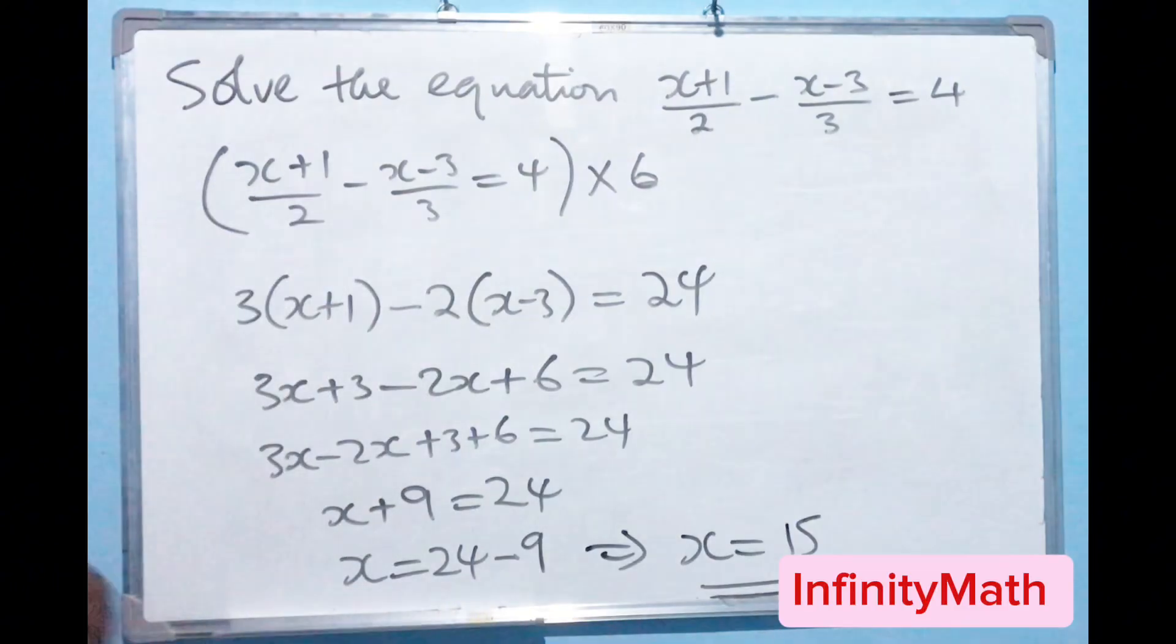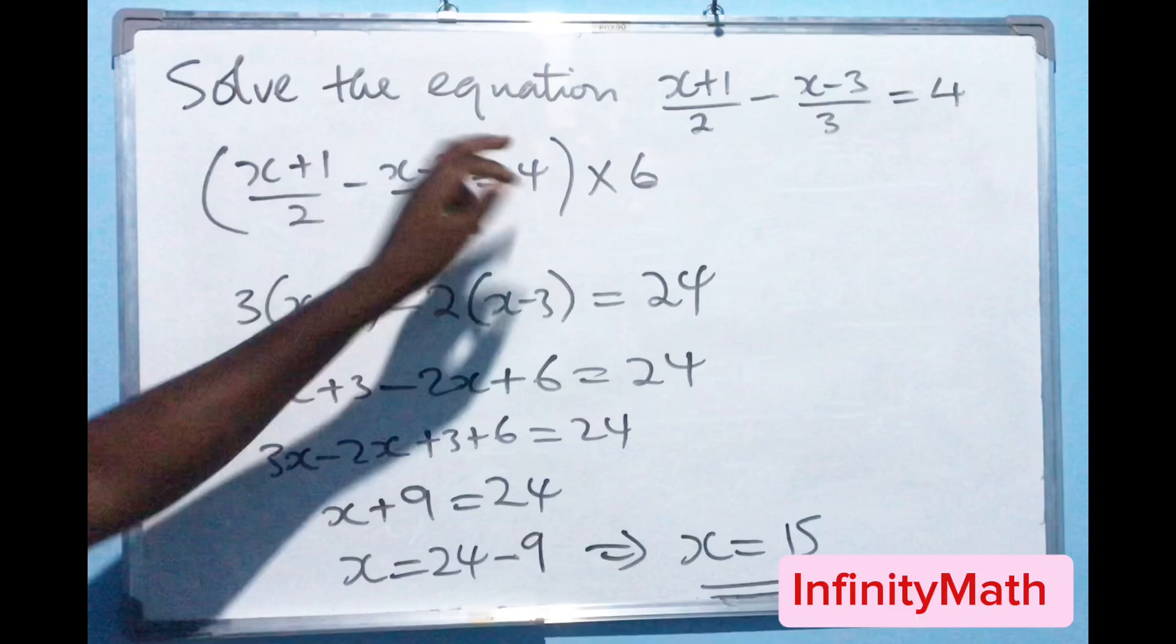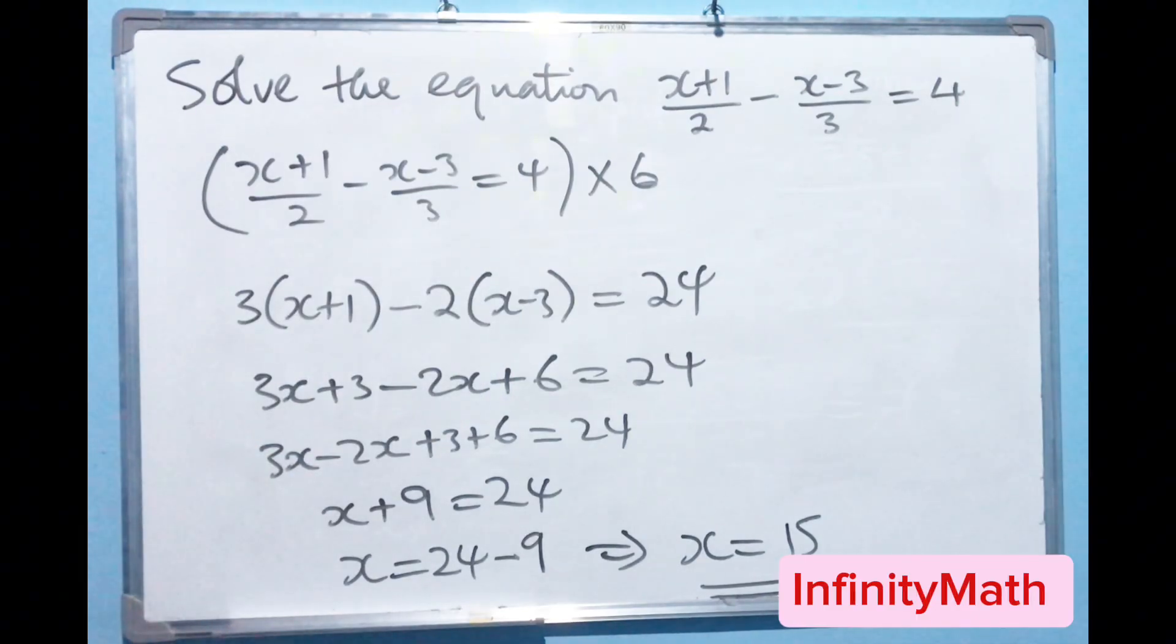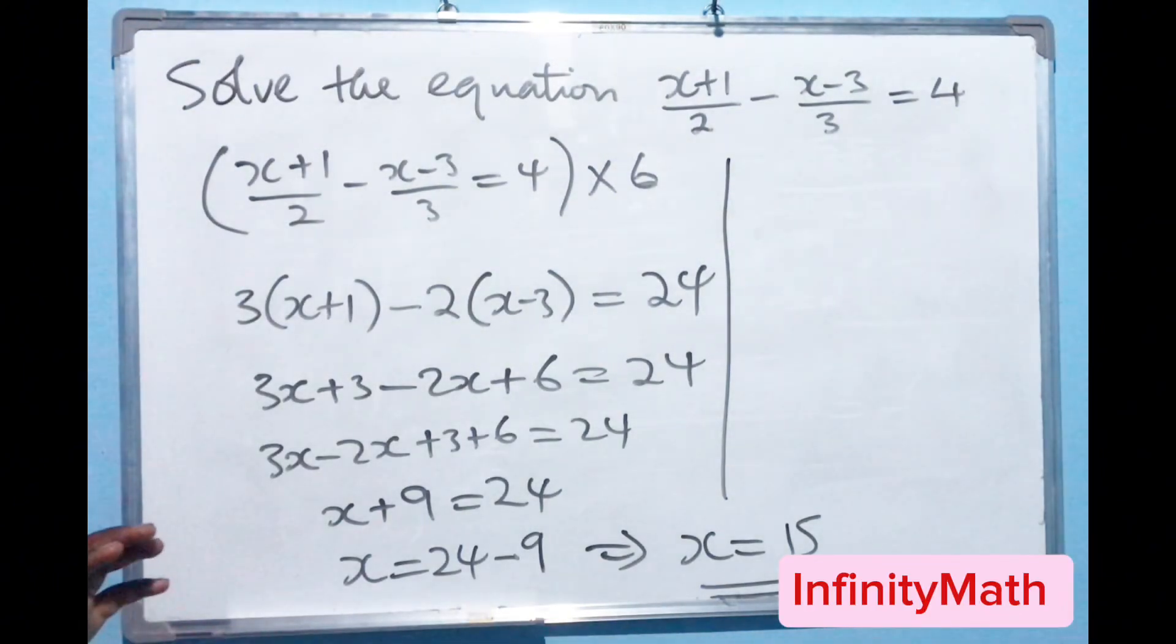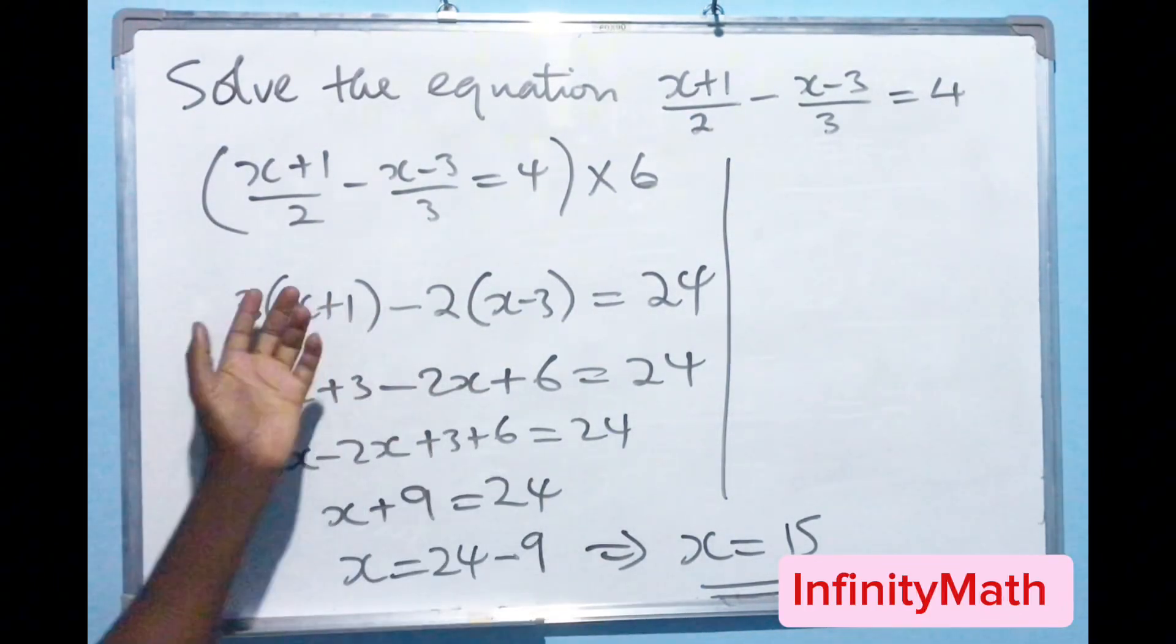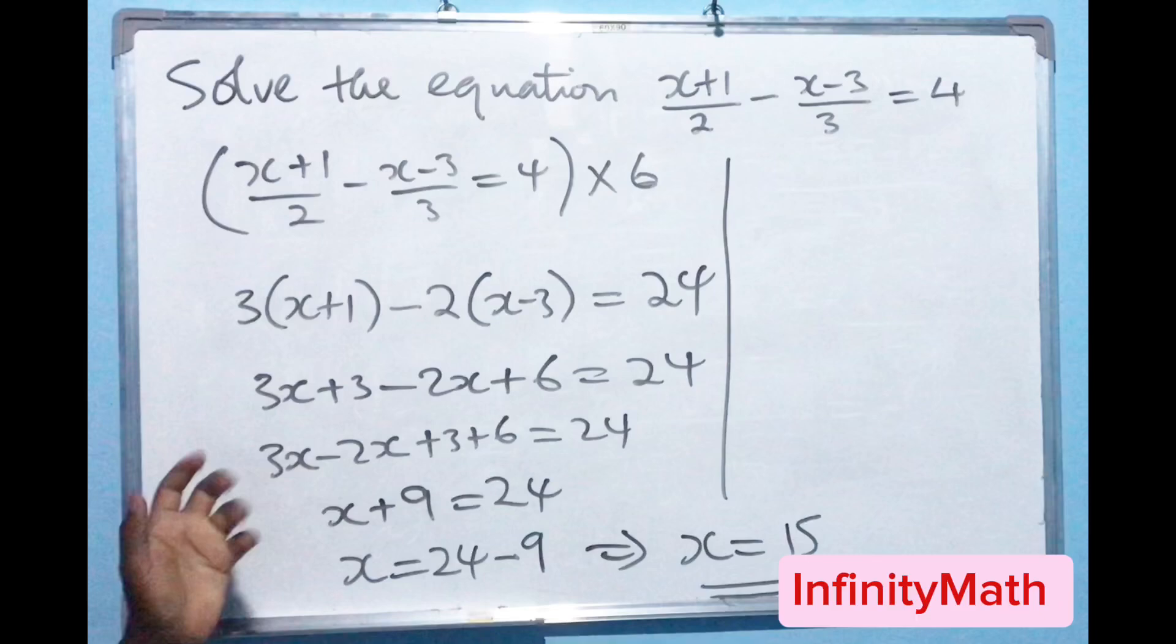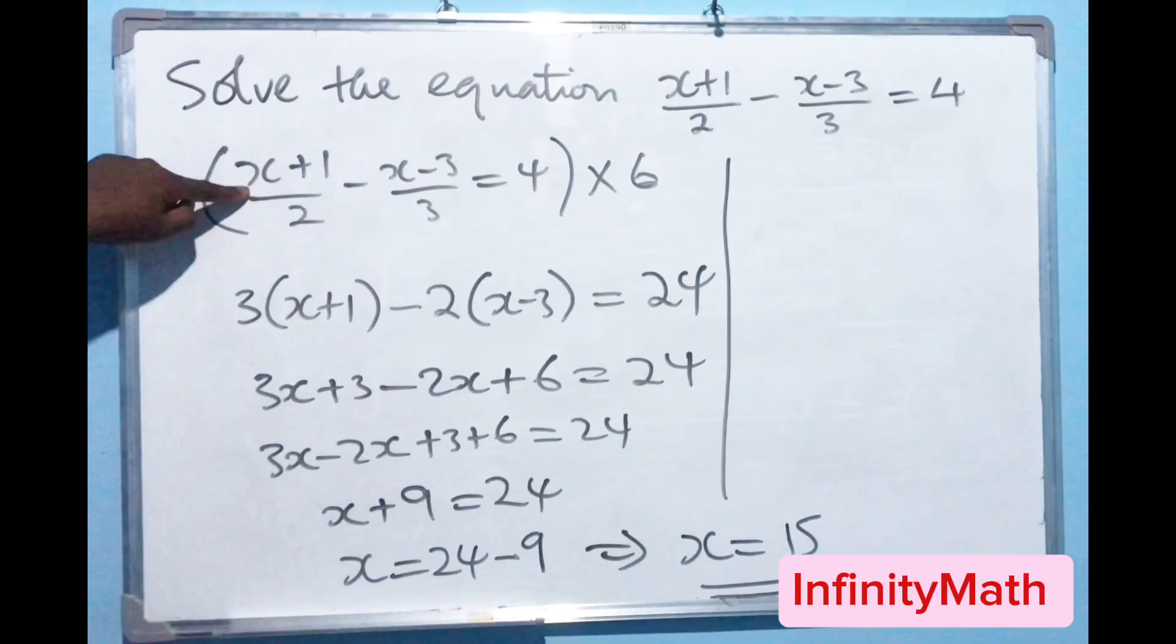So if you replace 15 where there is x you should be able to get 4 that side. So we should be able to prove these equations. Let me just try to prove it for you so that next time as you find the value for the x you can prove it into the equation and be able to see if the answer is correct.